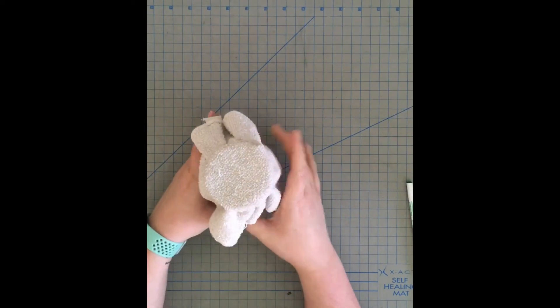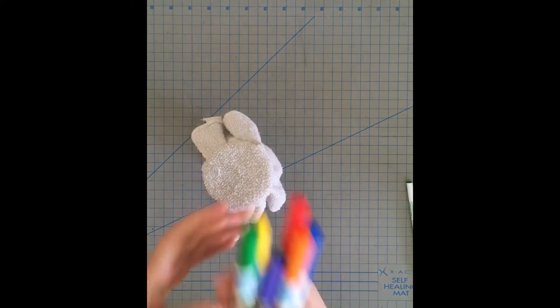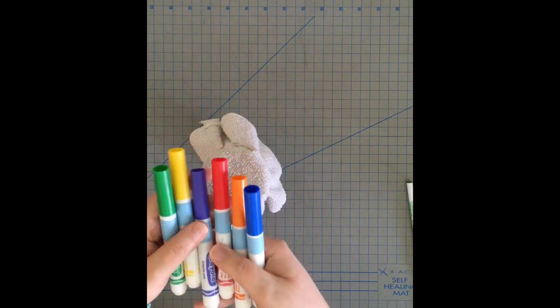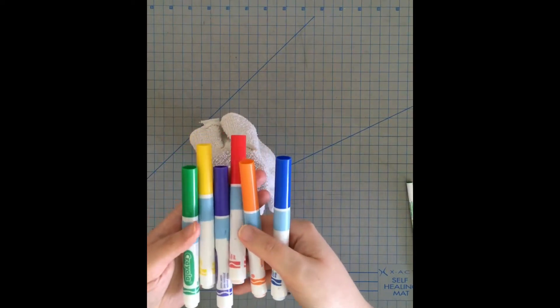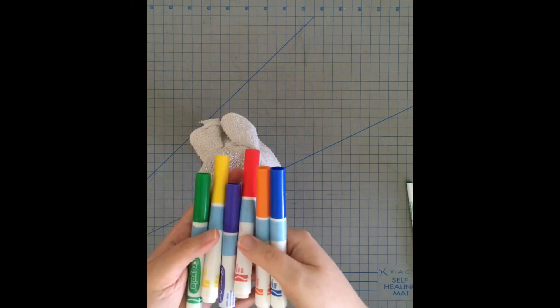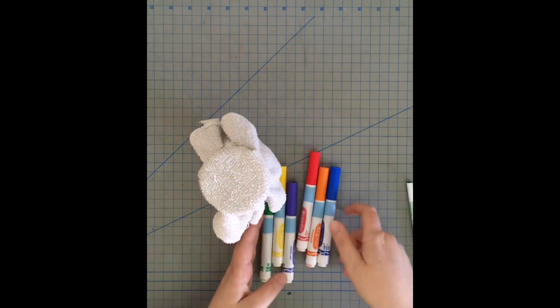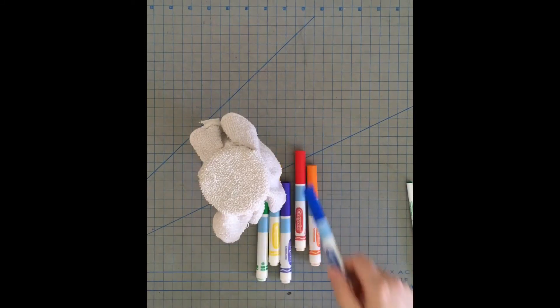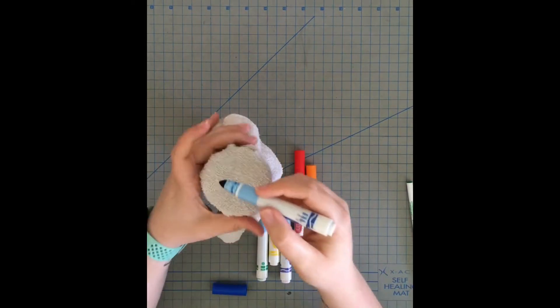Now I'm going to use whatever color markers you want and they can just be regular old Crayola markers, whatever you have at home, to color on the end. Whatever color you use, that's what color your bubble snake will be. Make sure you get that really nice and saturated.